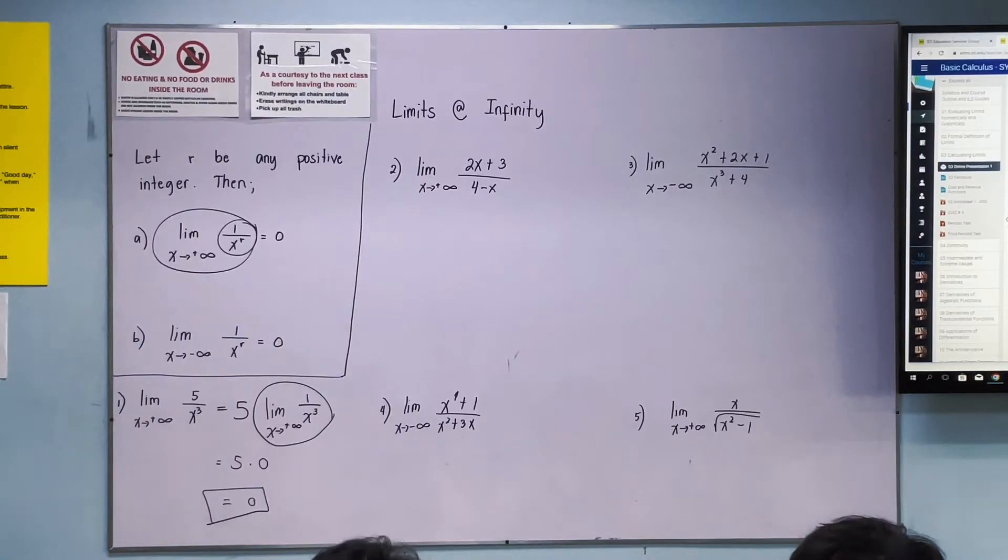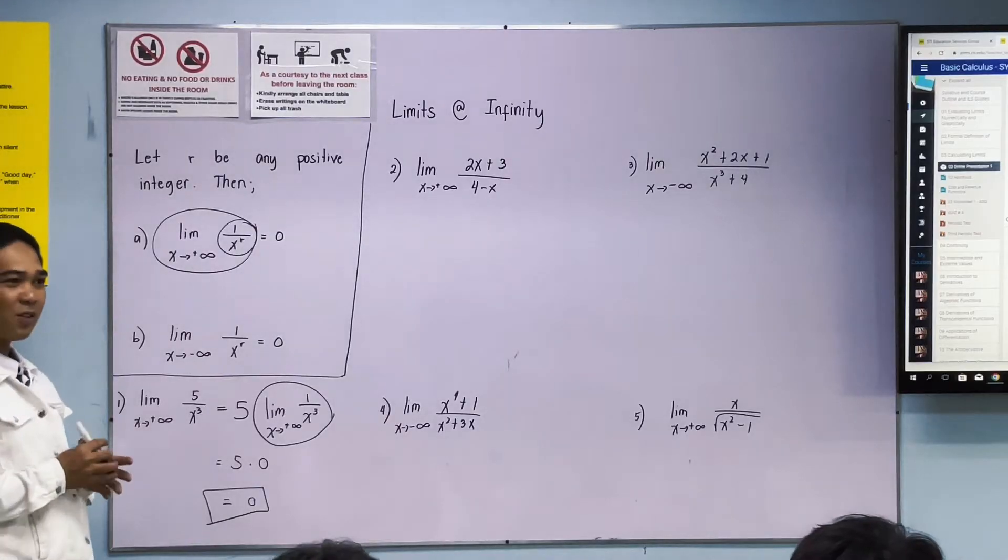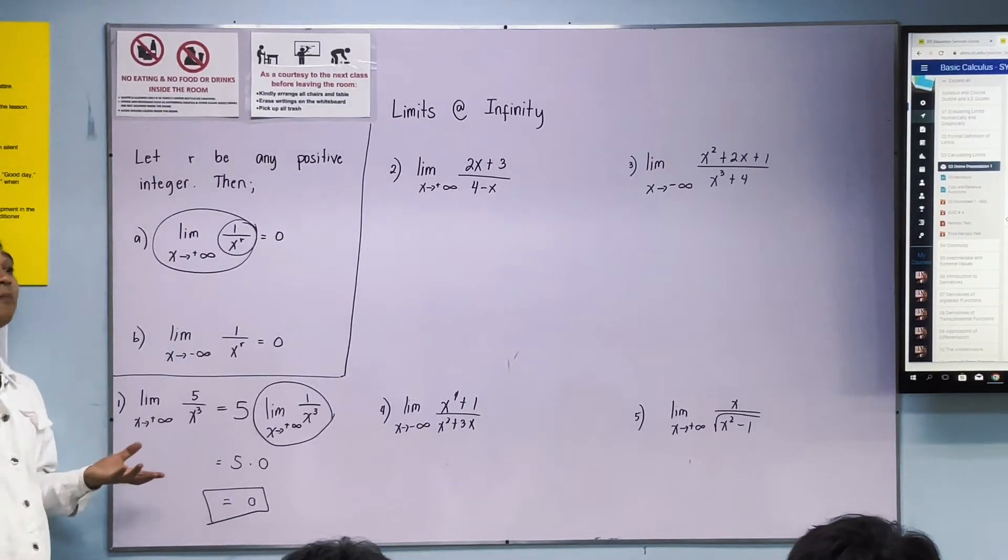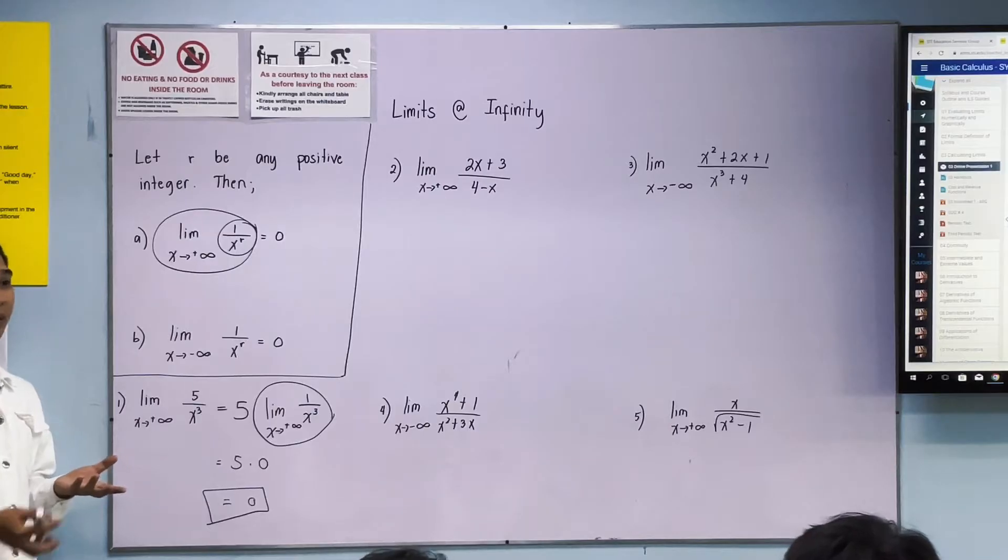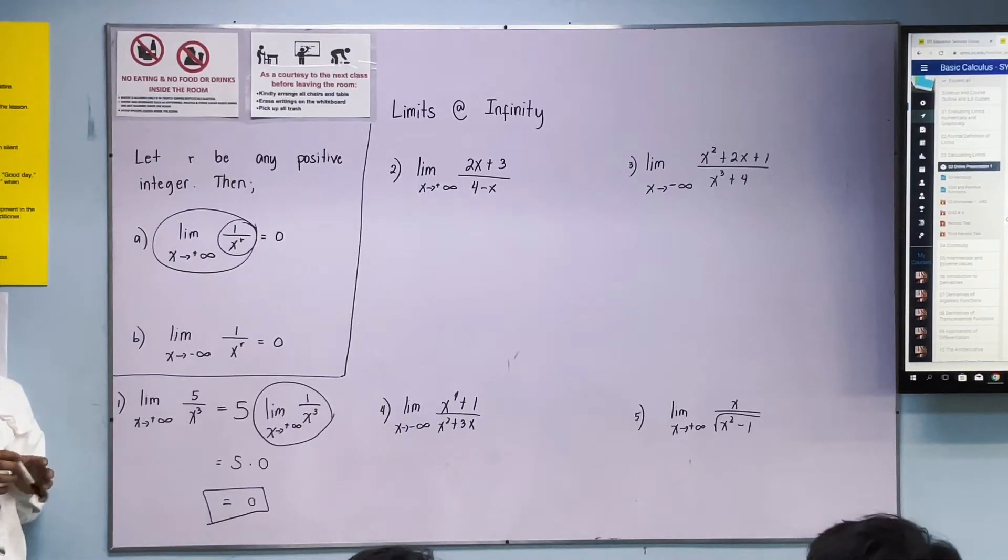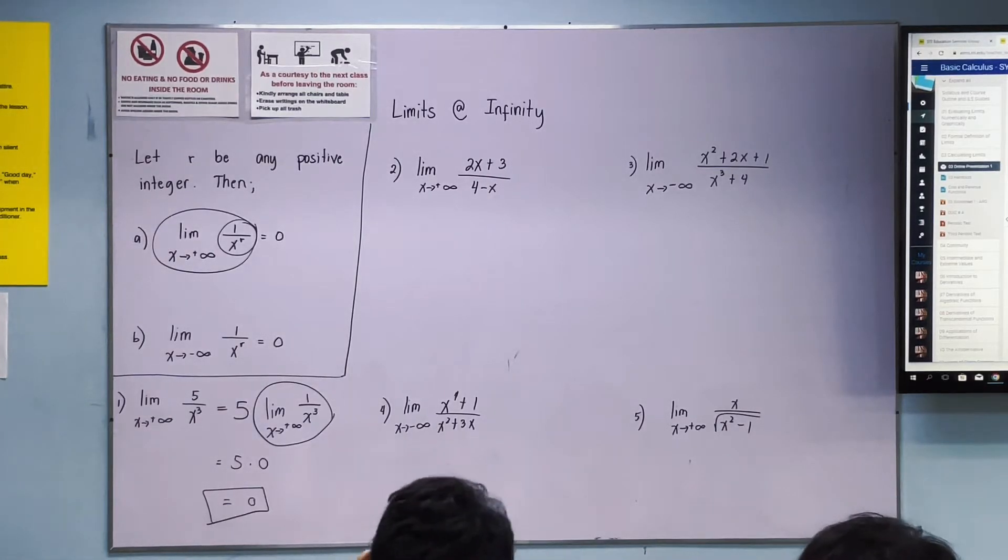Do you understand? Yesterday in another section, sir, is it possible that our answer to all of these is 0? So if we take a peek, I'll just answer 0? Let's check if number 2 is also 0.